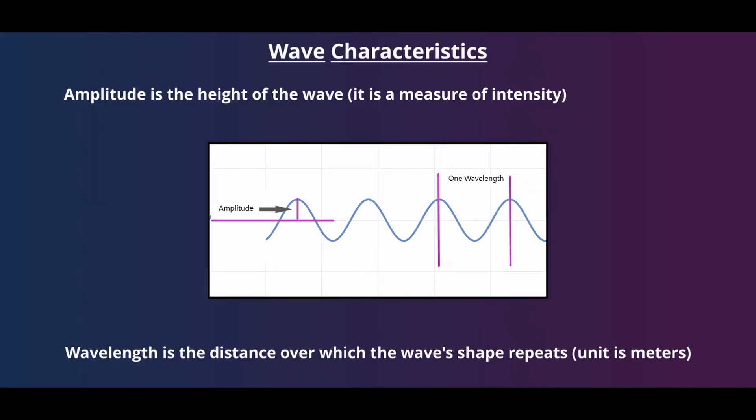Waves are also referred to by their amplitude and their wavelength. Amplitude can be defined as the maximum displacement of a particle from its position of equilibrium. In general, amplitude refers to the amount of energy a wave is carrying. Wavelength is the measure of distance from one point on a wave cycle to the same point on the next wave cycle. The typical unit for wavelength is meters.